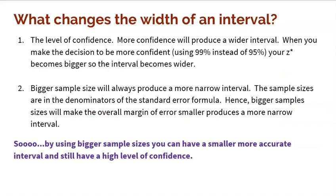Let's talk about the width of the interval. We would always prefer a more narrow interval because a more narrow interval is going to be more accurate, but we want to maintain high confidence. The level of confidence certainly plays a part in how big or small your interval is. Simply put, more confidence produces a wider interval. If you use 99% instead of 95%, your Z* is going to be bigger, and a bigger Z* is going to produce a bigger interval. So all things being equal, more confidence means a bigger interval.